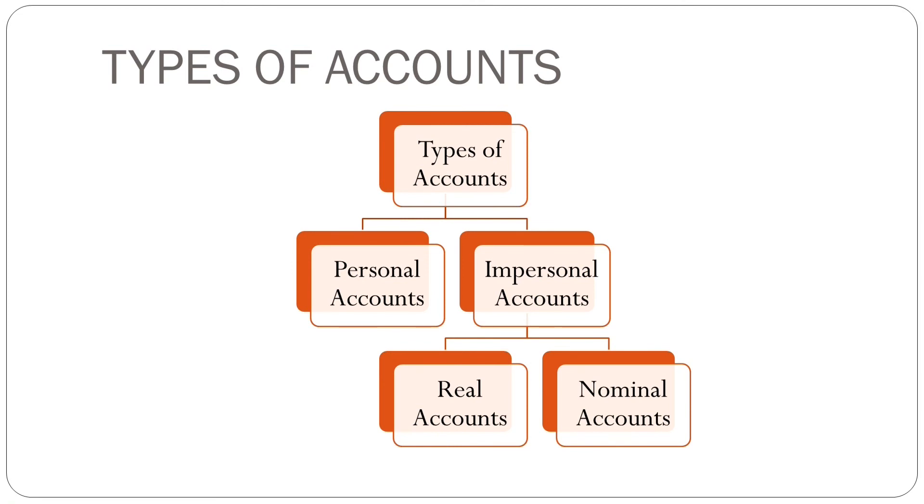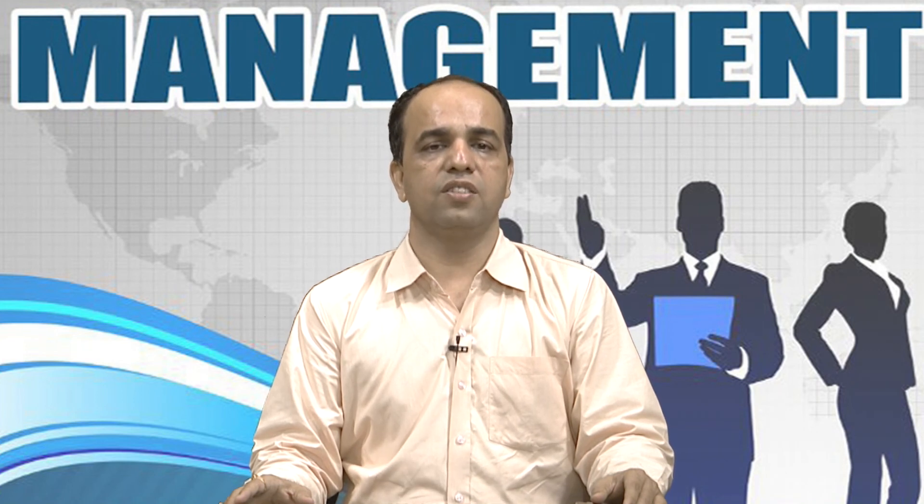Real accounts: each property or asset acquired by the firm is termed as a real account. These accounts are both tangible and intangible. Tangible real accounts relate to real properties which we can see, touch, or feel, such as building, furniture, machinery, etc. Intangible real accounts consist of things which cannot be touched but may be measured in terms of money, such as goodwill, trademark, patents, copyright, etc. Nominal accounts: these are the accounts of incomes, expenses, gains, and losses — rent, wages, salary, telephone expenses, discount received, discount allowed, etc.